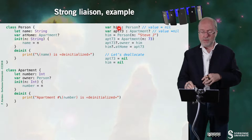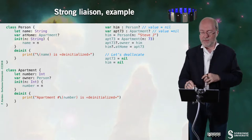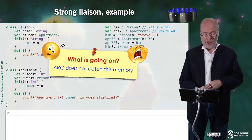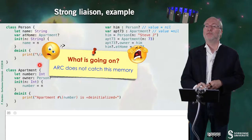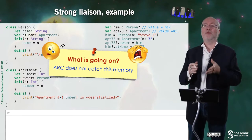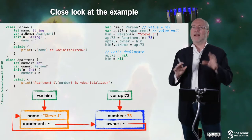Here I have a variable 'him' which is a Person optional, and a variable apartment which is an Apartment optional. I create a Person called Steve J. and an apartment with number 73. I say that the owner of this apartment is 'him', and that 'him' lives in this apartment. Now I deallocate — I set the two references to nil. In the playground I see no output at all, while I was expecting deinit output for both objects.